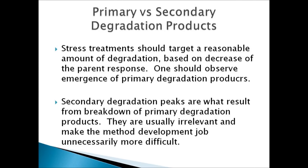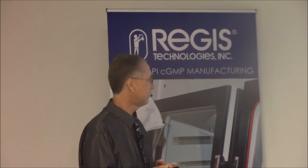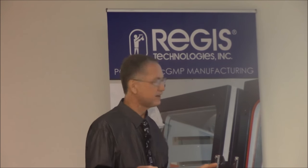A couple of other definitions pertinent to this field are primary and secondary degradation products. Primary degradation products are what you form when you degrade a sample — these are the emerging degradation products and the type you want to create from stress treatment. Secondary degradation peaks result from breakdown of primary degradation products, and typically they're irrelevant and make the method development job unnecessarily more difficult. Predictive degradation is when your level is good, where one or more relevant degradation products are observed. Useless is when you over-degrade or when you apply a lot of treatment and aren't actually seeing anything form.